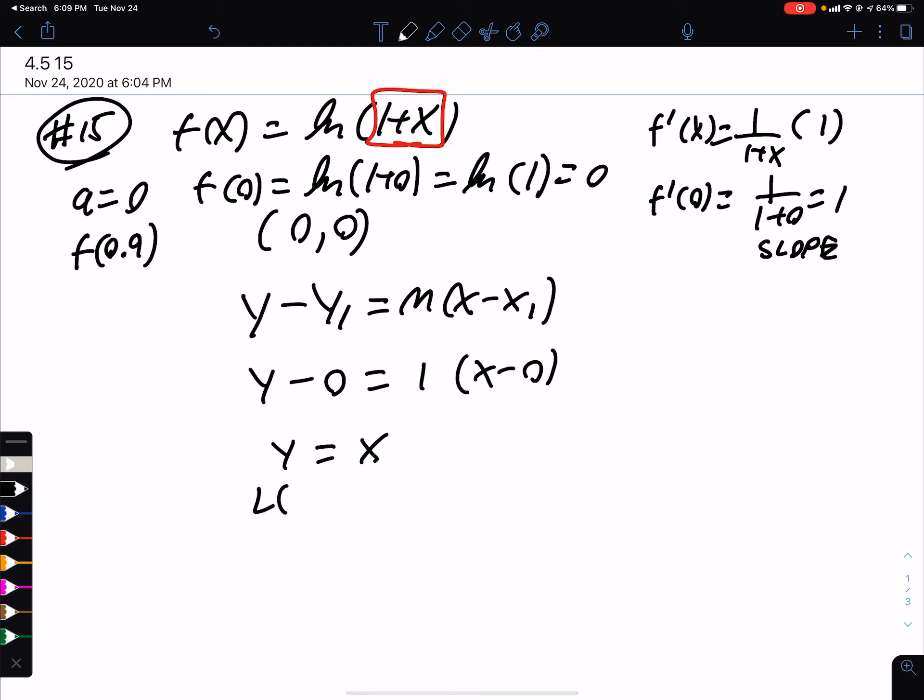So we have a pretty simple tangent line approximation. Sometimes people put l of x for linear approximation. So to find f at 0.9, the approximation is l at 0.9, which is just 0.9.